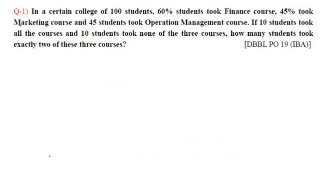Question number one: In a certain college of 100 students, 60 students took Finance course, 45 percent took Marketing course, and 45 students took Operation Management course. If 10 students took all the courses and 10 students took none of the three courses, how many students took exactly two of these three courses?